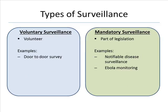Slide 20: An example of voluntary surveillance is a door-to-door survey. Mandatory surveillance is part of legislation. Examples include notifiable disease surveillance or Ebola monitoring.